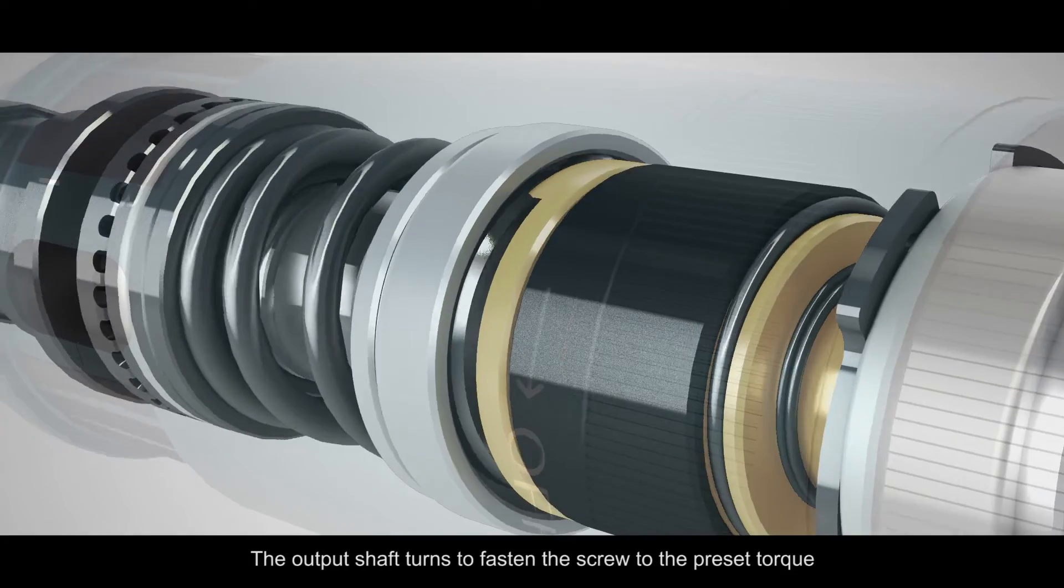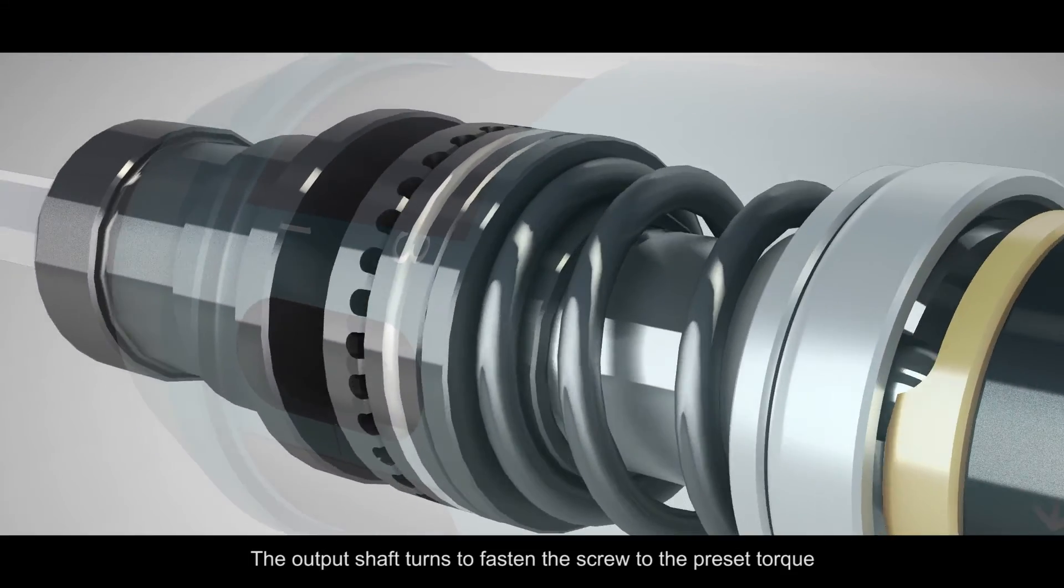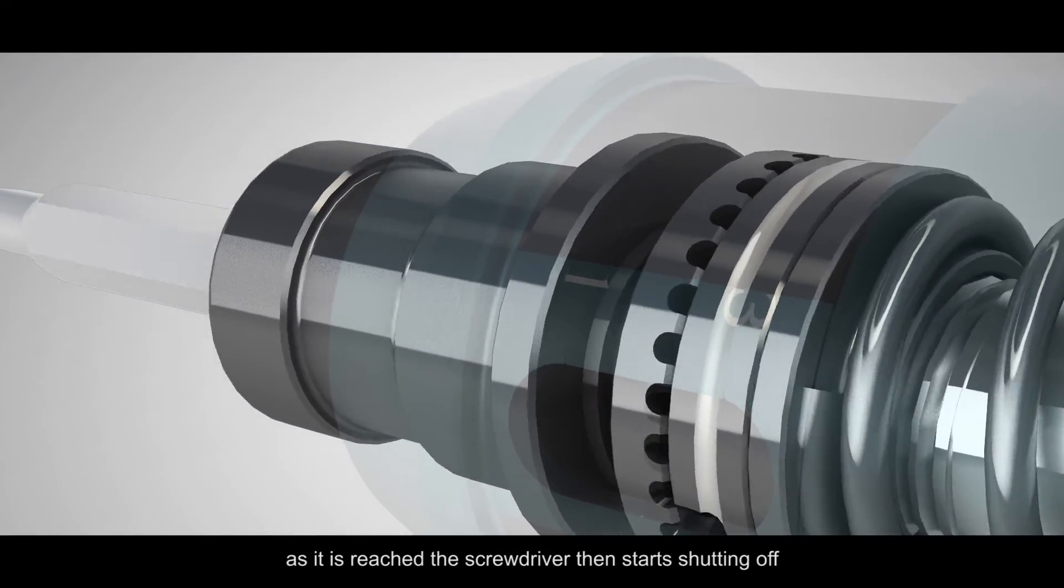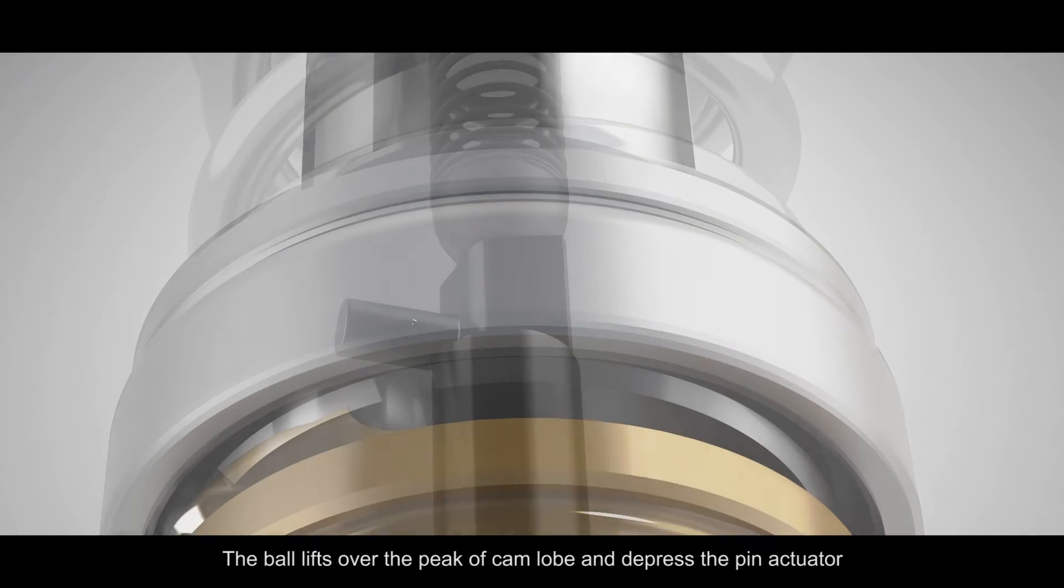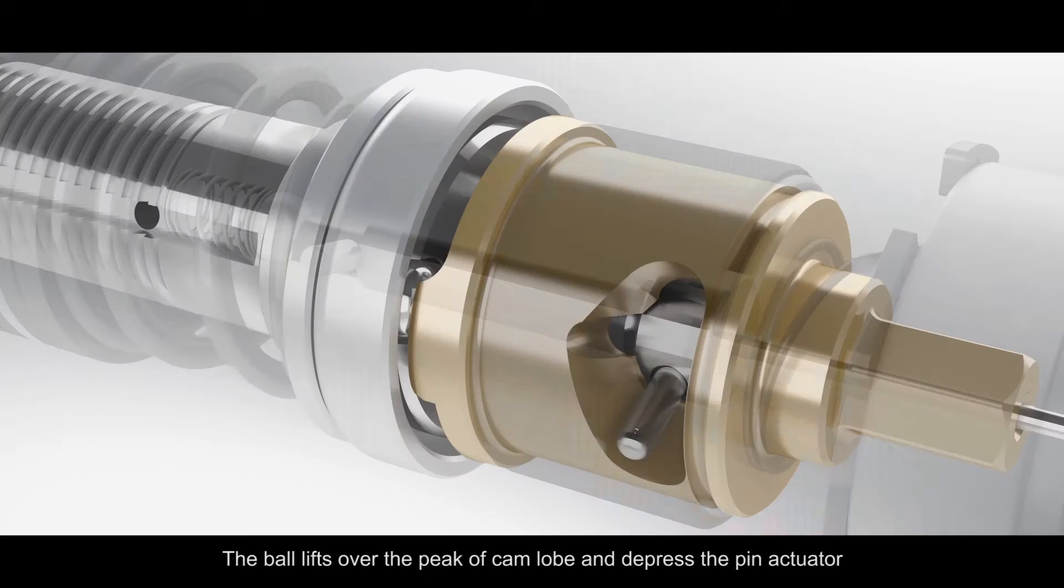The output shaft turns to fasten the screw to the preset torque. As it is reached, the screwdriver then starts shutting off. The ball lifts over the peak of the cam load and depresses the pin actuator.